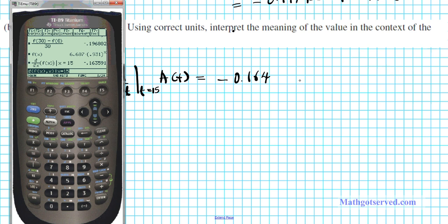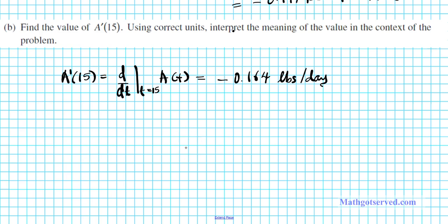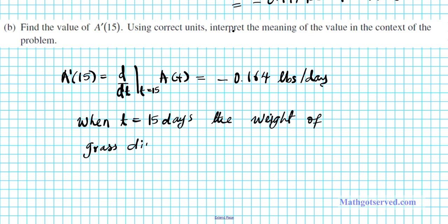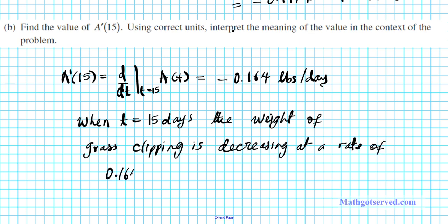The units are pounds per day. Now let's interpret this answer in context: when t = 15 days, the weight of grass clippings is decreasing — because we have a negative derivative — at a rate of 0.164 pounds per day. That's the meaning of the solution.